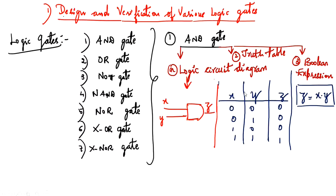In the truth table, we give four input combinations for X and Y: 0,0 then 0,1 then 1,0 and 1,1. The outputs are 0, 0, 0, and 1. This is the truth table for the AND gate. The Boolean expression is Z equals X AND Y.